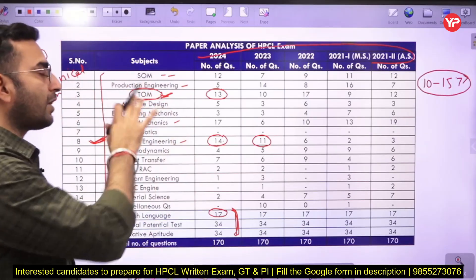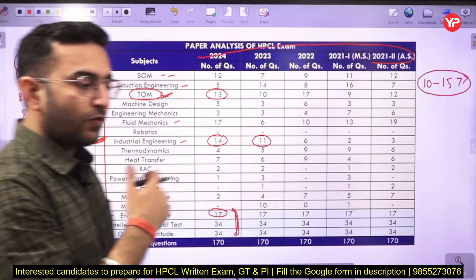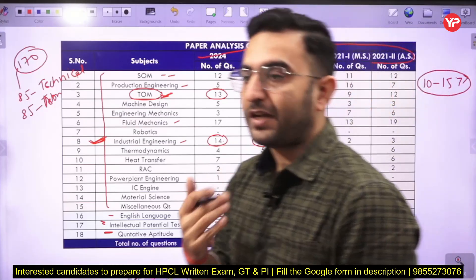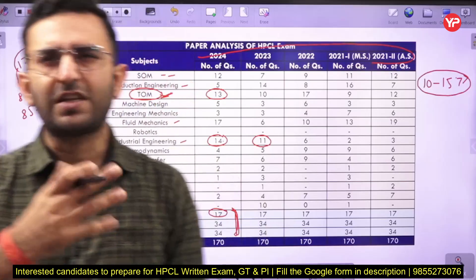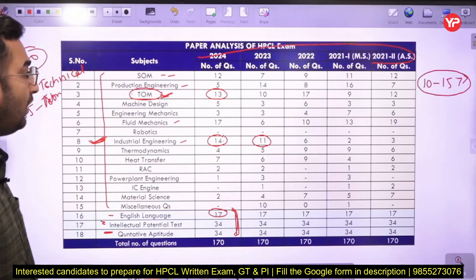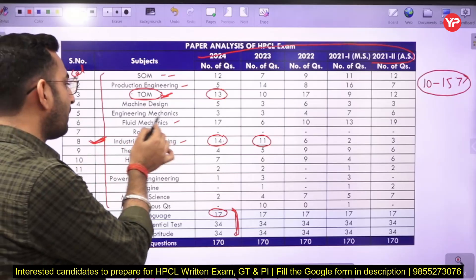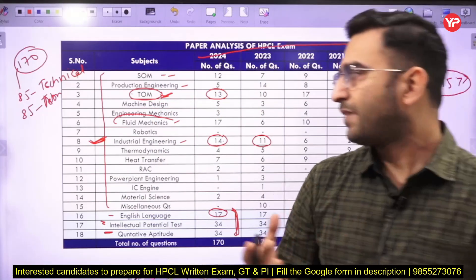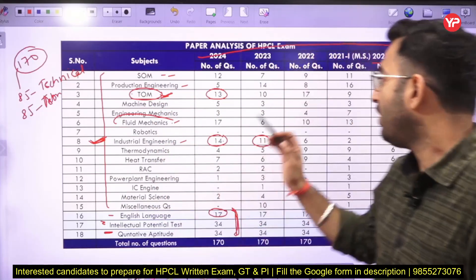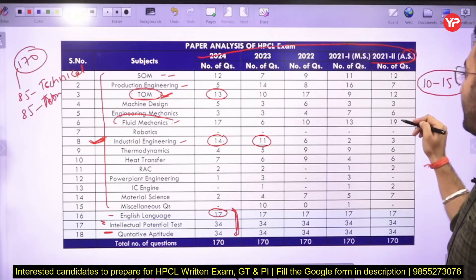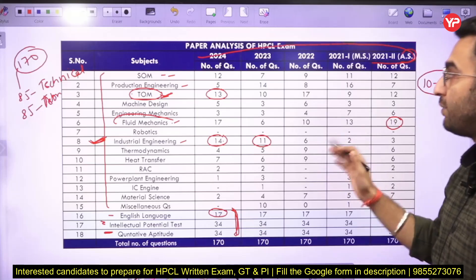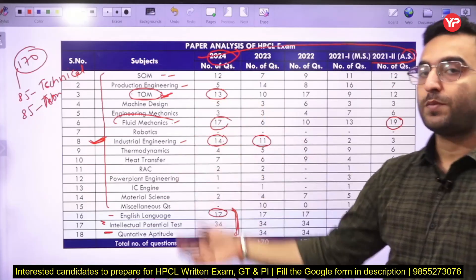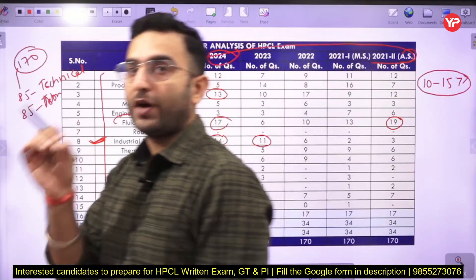Theory of machines also includes the vibration part, from which a large number of questions are asked — such as calculating natural frequency, critical speeds, and stiffness of systems. For fluid mechanics, some basic numericals are asked, like how to measure pressure and how to measure head losses in flow through a pipe. In the 2021 afternoon shift, almost 20 questions were asked from fluid mechanics, and in 2024, 17 questions were asked. So make sure you cover some basic numericals as well as the theoretical portions of fluid mechanics.